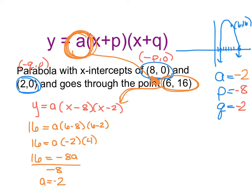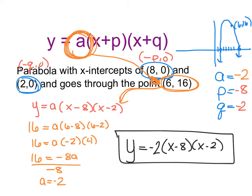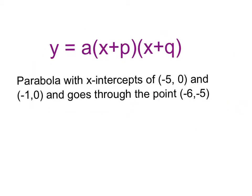Now I have all of my values for a, p, and q, which means I can finally write my quadratic function. It is y is equal to negative two times x minus eight times x minus two, where negative two is my a value, negative eight is p, and negative two is q.